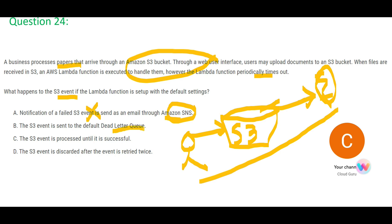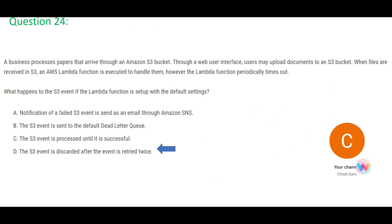Option B says we will make use of Dead Letter Queues, but Dead Letter Queues are a feature of SQS, not S3 or Lambda directly, so B is wrong. Option C is the most illogical — it says Lambda keeps trying until it succeeds. What if it times out every single time? Would you keep trying forever? So C is wrong. That leaves us with the logical answer: Lambda will retry twice and then discard the event. That is my final answer.